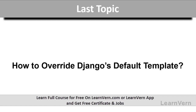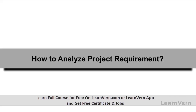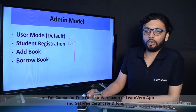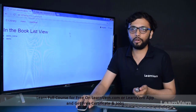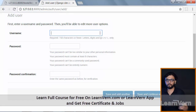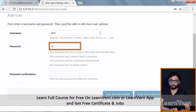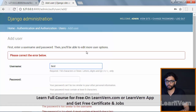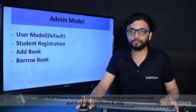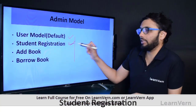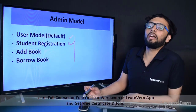In the previous lecture we saw how to override Django's default template. Now in this lecture we'll see how to analyze any project requirement. You might have doubt that if Django already provides a registration form, why should we need a student registration form? We'll see afterwards, but yes we need this.